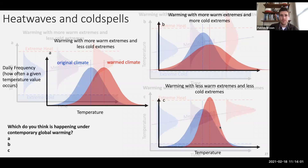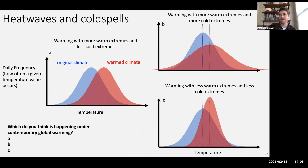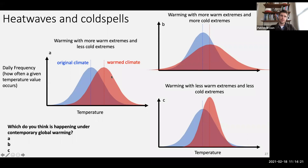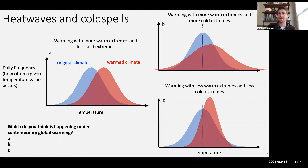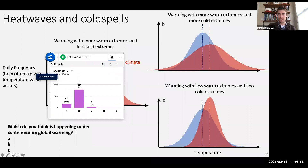So what do you think is happening in the current climate system? Which is happening under contemporary global warming? The iClicker options: A — warming but keeping the same shape, so less cold extremes and more warm extremes; B — warming but getting a broader distribution, so more extremes on both sides; or C — warming but narrowing, so warming in the average but less cold extremes and less warm extremes.